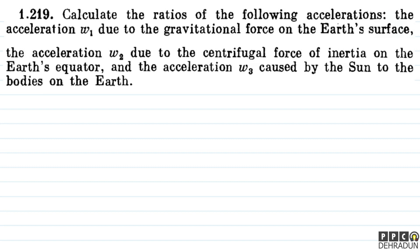The question says: calculate the ratios of the following accelerations. The acceleration w1 due to the gravitational force on the earth's surface, the acceleration w2 due to the centrifugal force of inertia on the earth's equator, and the acceleration w3 caused by the sun to the bodies on the earth.